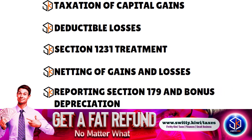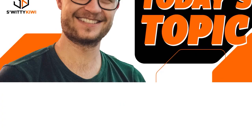This netting provision can help optimize the tax consequences of multiple transactions. If you claimed Section 179 expensing or bonus depreciation on business property that is subsequently sold, Form 4797 allows you to report the recapture of those deductions, ensuring the tax benefits received are properly accounted for. Form 4797 also provides a structured, simplified format for reporting the sale of business property.